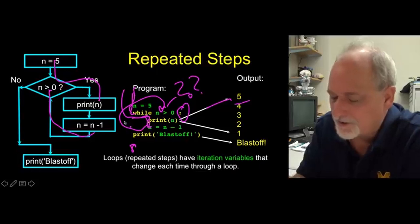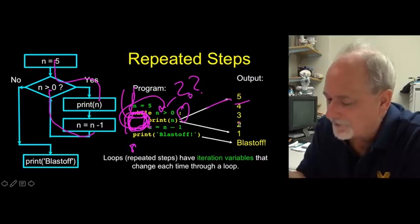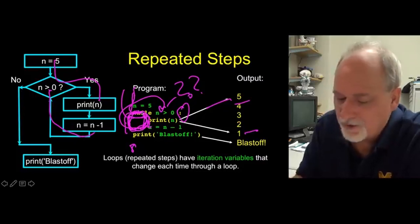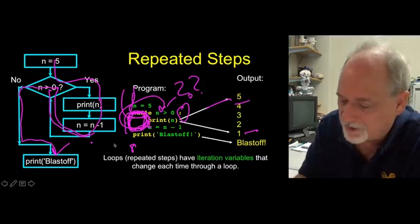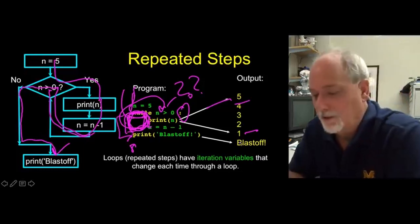And it goes back up and asks this question again. Is n greater than zero? If it is, continue on and prints four, and then subtracts it. Four, three, two, and prints out one. Then it comes up and now after this, n is now zero, and n is no longer greater than zero, so it takes the exit ramp and goes down here and runs the next line.